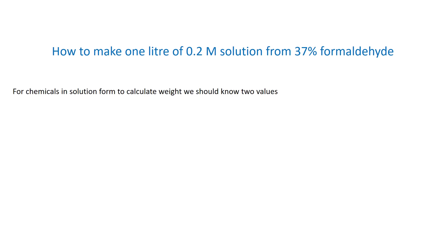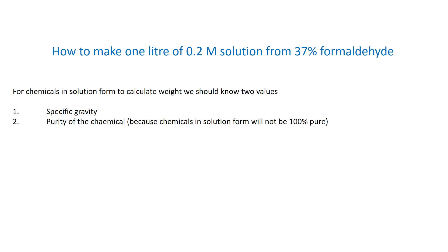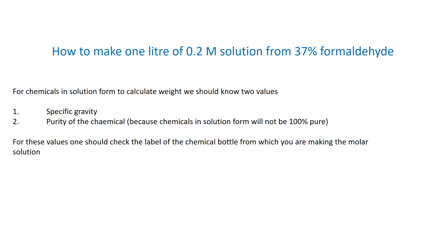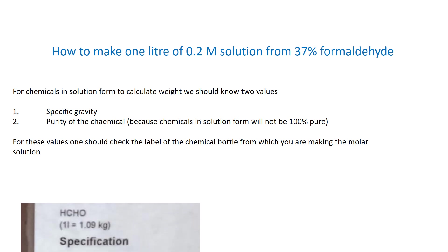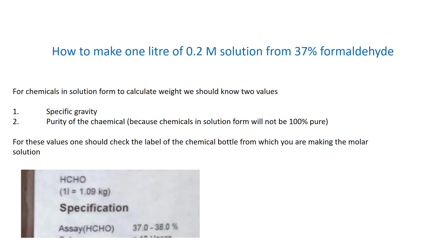For chemicals in solution form, to calculate weight we should know two values: one is the specific gravity, and second is the purity of the chemical. When a supplier gives chemicals in solution form, it will not be 100 percent pure, so check the label of the chemical bottle. The specific gravity of formaldehyde is 1.09 kg per liter, its purity is 37 percent, and its molecular weight is 30.031 grams — that is, one mole of formaldehyde is 30.031 grams.